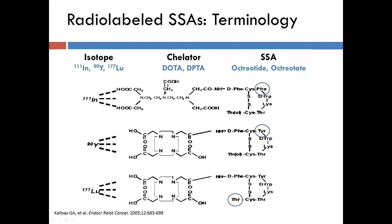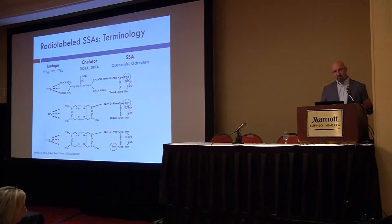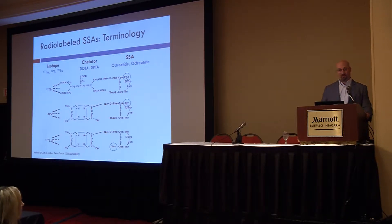As far as terminology, it's really quite simple. There are several types of somatostatin analogs used. You can use octreotide, also known as sandostatin. You can use octreotate, which is slightly modified and has higher affinity to certain somatostatin receptor subtypes. We use a chelator, which is basically a cage that contains the isotope — one is called DOTA — and then the isotope, typically yttrium-90 or lutetium-177. So if it's lutetium attached to DOTA attached to octreotate, it's called lutetium dotatate, which is a term some of you may have heard of.